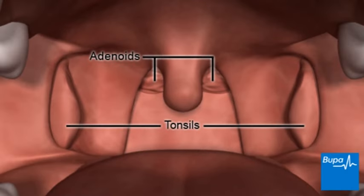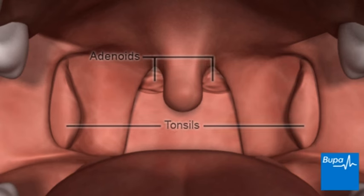The adenoids are two small lumps of tissue that lie at the back of your nose. The tonsils are two oval lumps of tissue. They sit on either side of the back of your mouth, behind your tongue.